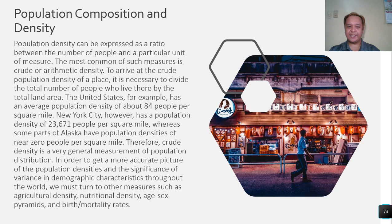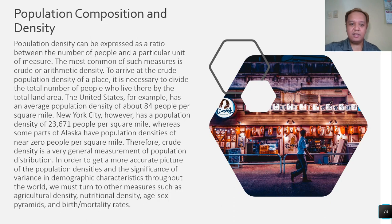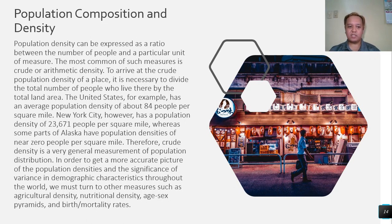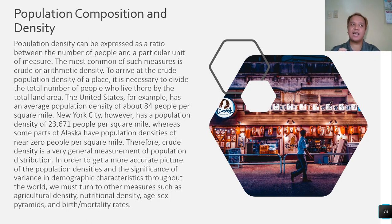Population composition and density: population density can be expressed as a ratio between the number of people and a particular unit of measure. The most common is the crude or arithmetic density. To calculate it, divide the total number of people by the total land area. For example, the United States has an average population density of about 84 people per square mile, while New York has 23,671 people per square mile, whereas some parts of Alaska have densities near zero — since it depends heavily on how many people are concentrated in a given area.